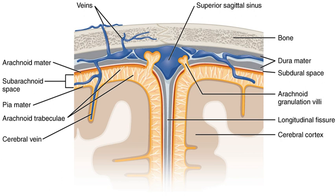The meninges, singular meninx, from ancient Greek meaning membrane — the adjectival form is meningeal — are the three membranes that envelop the brain and spinal cord. In mammals, the meninges are the dura mater, the arachnoid mater, and the pia mater. Cerebrospinal fluid is located in the subarachnoid space between the arachnoid mater and the pia mater. The primary function of the meninges is to protect the central nervous system.